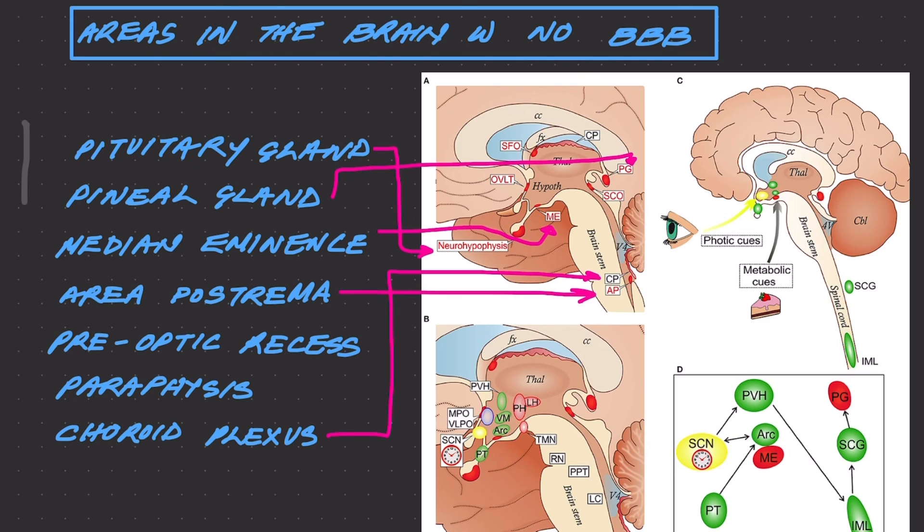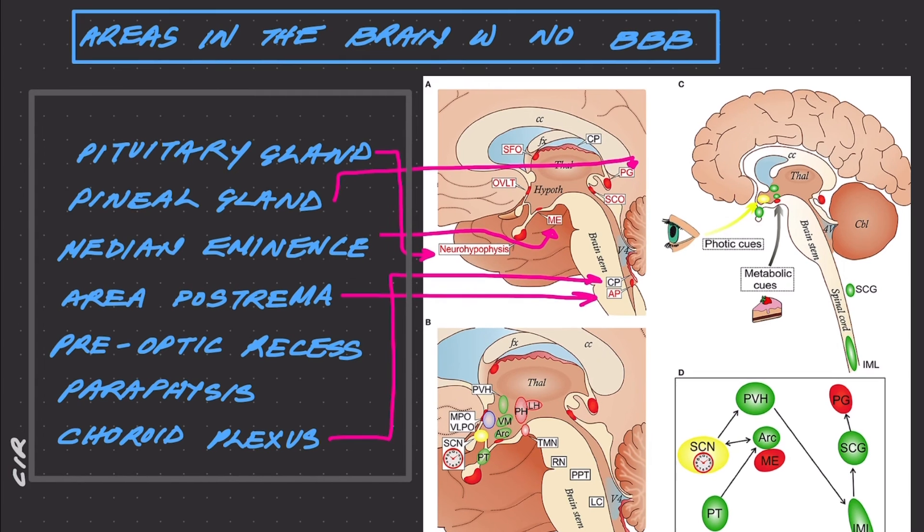Collectively, these are called circumventricular organs. Many of these participate in hormonal control.